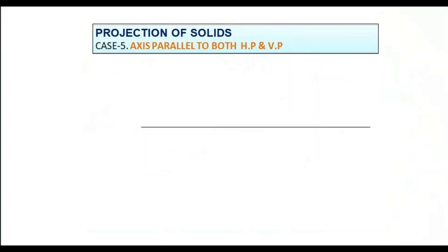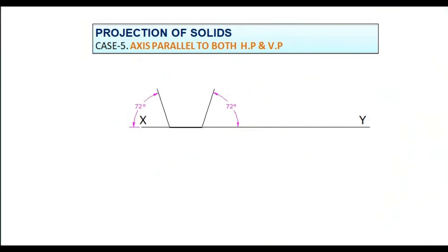Initially, draw an XY line. Draw a pentagon by having one side on the XY line. Draw 72 degree lines on both the ends. Take the size of the side on the compass and cut arcs on the lines. From these intersections, again cut arcs to find out the other corner.